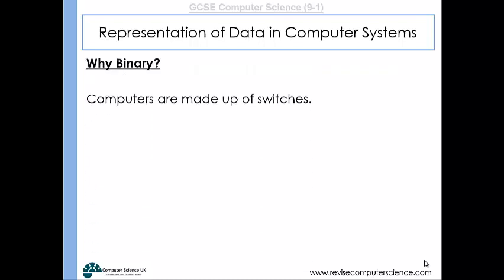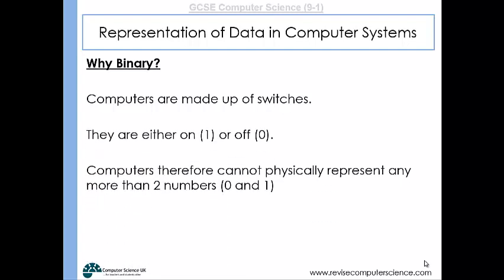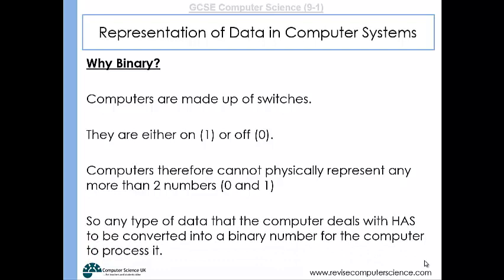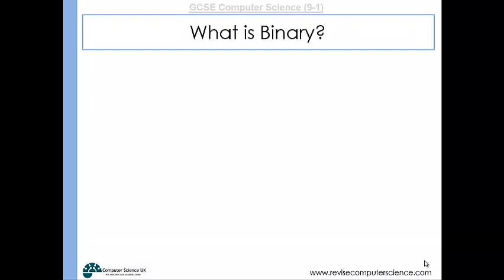So why binary? Well, ultimately, CPUs can only deal with binary numbers, only with zeros and ones, because they're made up of switches. They're either on or off. There's only two states in a computer, so they can't physically represent any more than two numbers. Any type of data that the computer deals with has to be converted into a binary number for the computer to be able to process it.